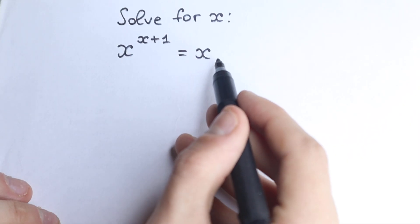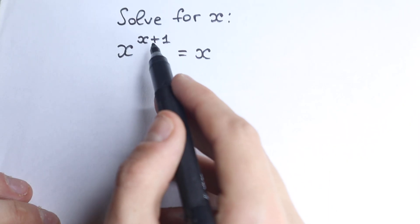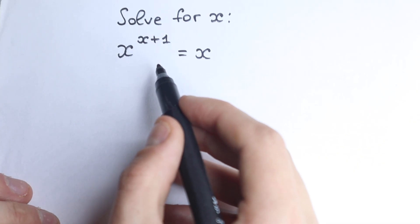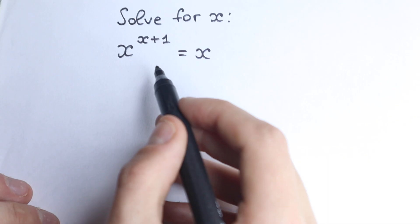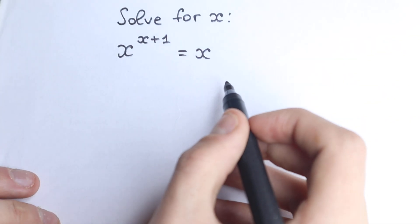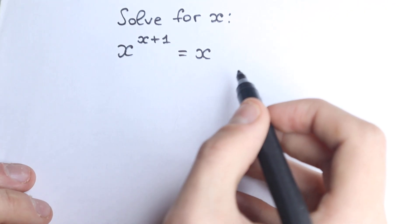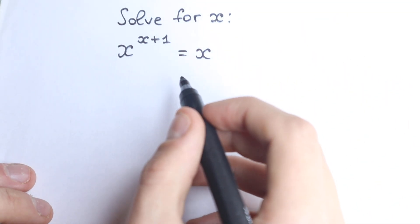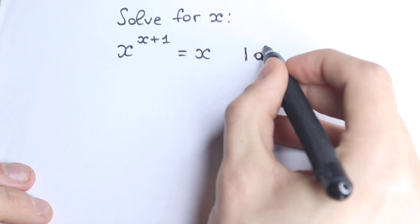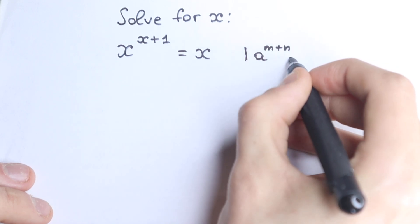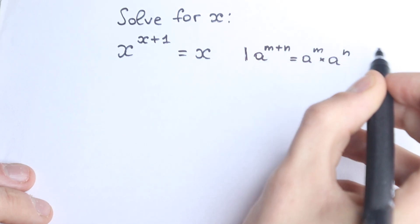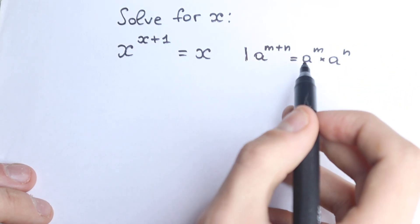We have x on the right and x in our power on the left, so it looks like not an easy question. First of all you need to know about a really great and classic power rule: a to the power m plus n equals a to the power m times a to the power n.